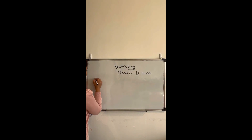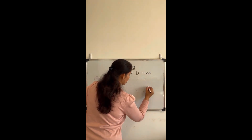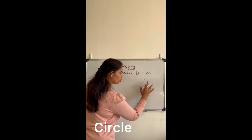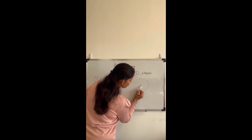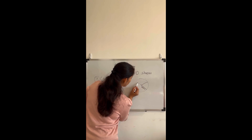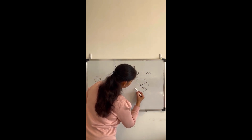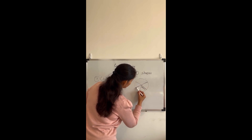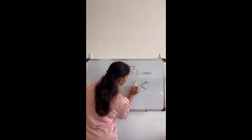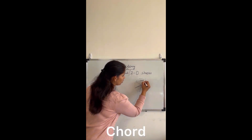Circle is also a 2D shape but not a polygon. If I draw a circle, the center point is called the center of the circle. A line drawn from the center to the boundary of the circle is called the radius, and all radii must be equal. A line from one boundary point to another that passes through the center is called the diameter.